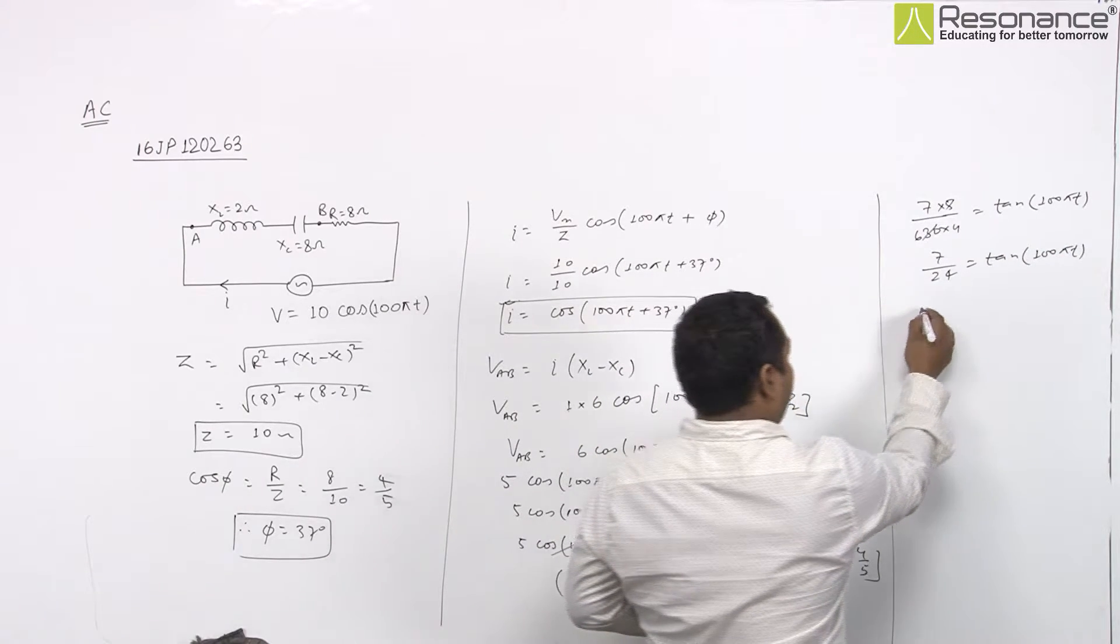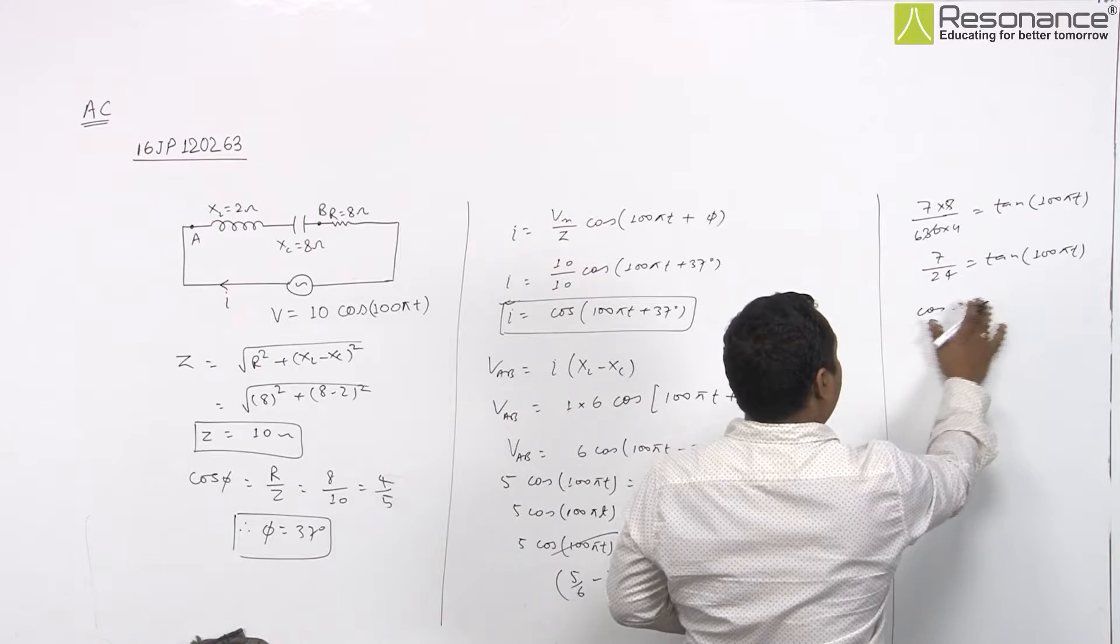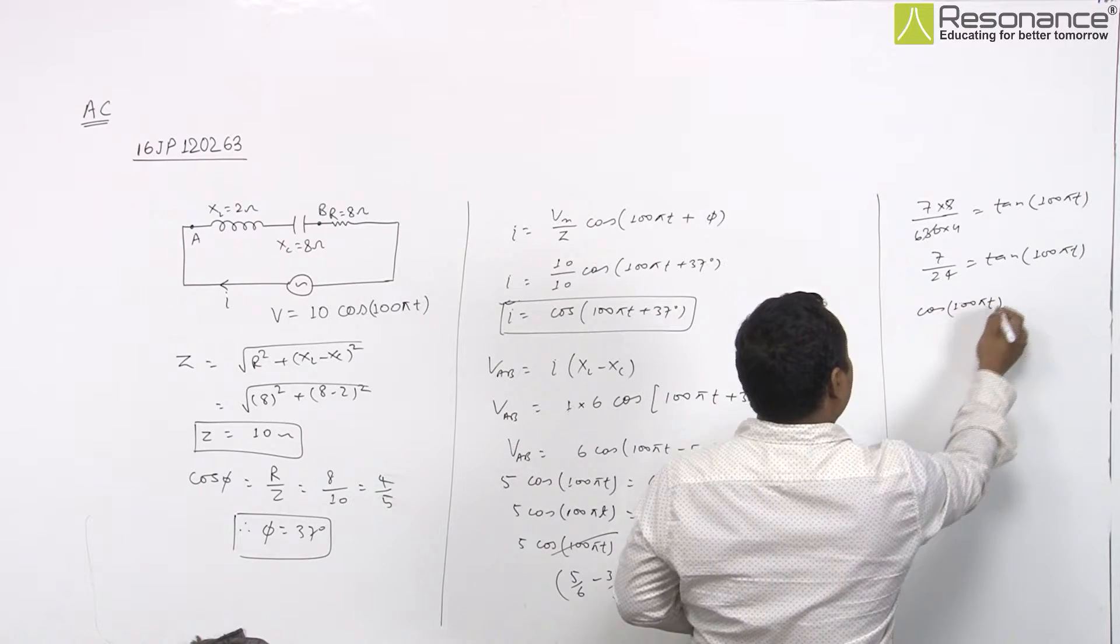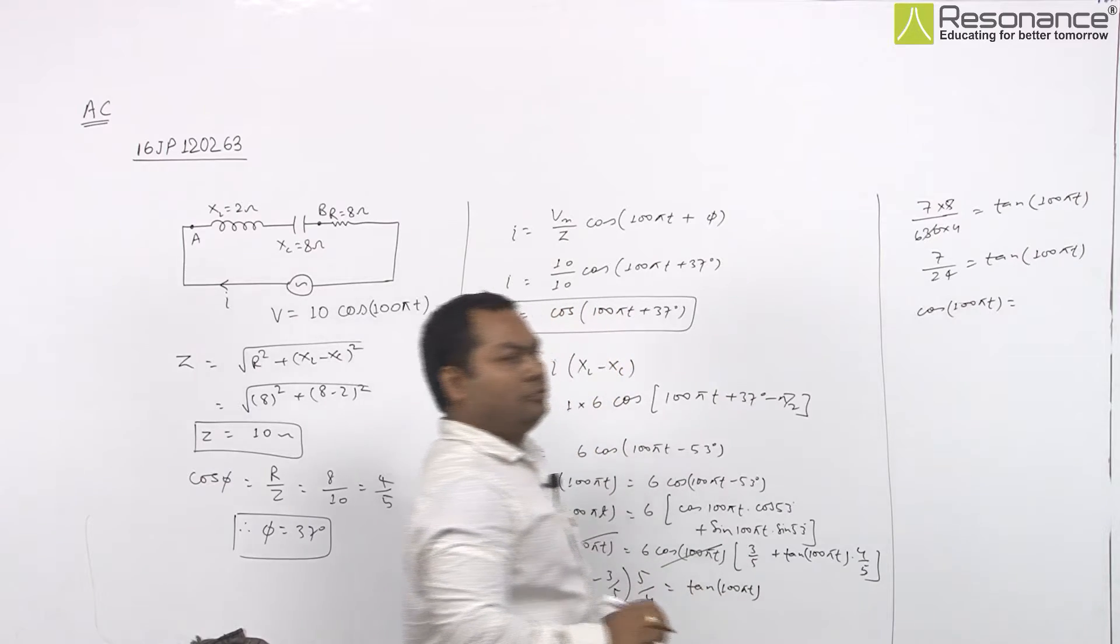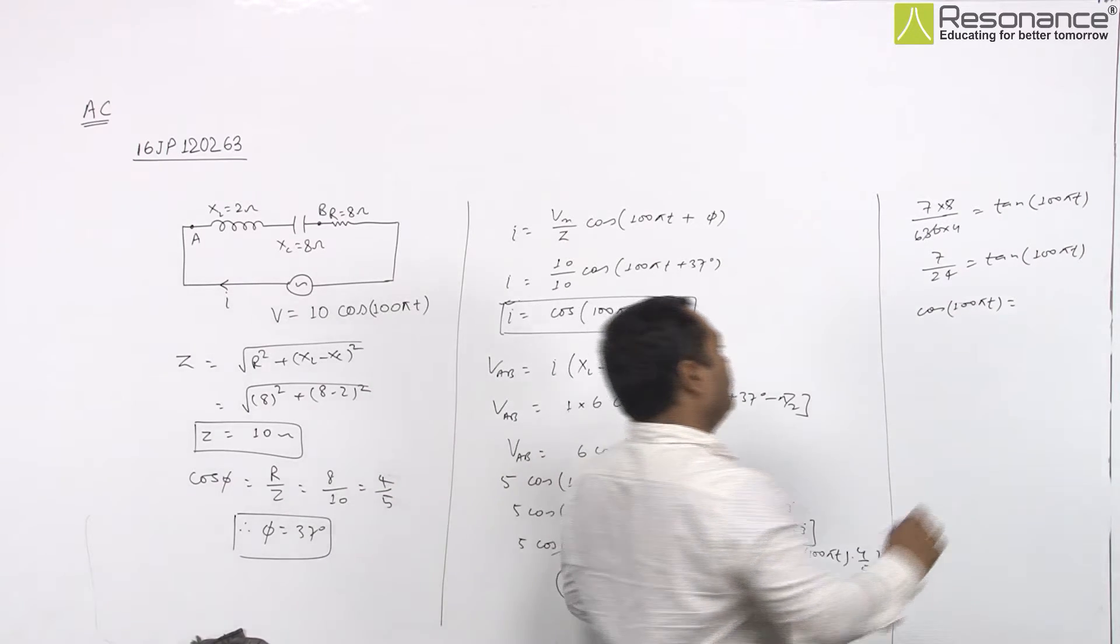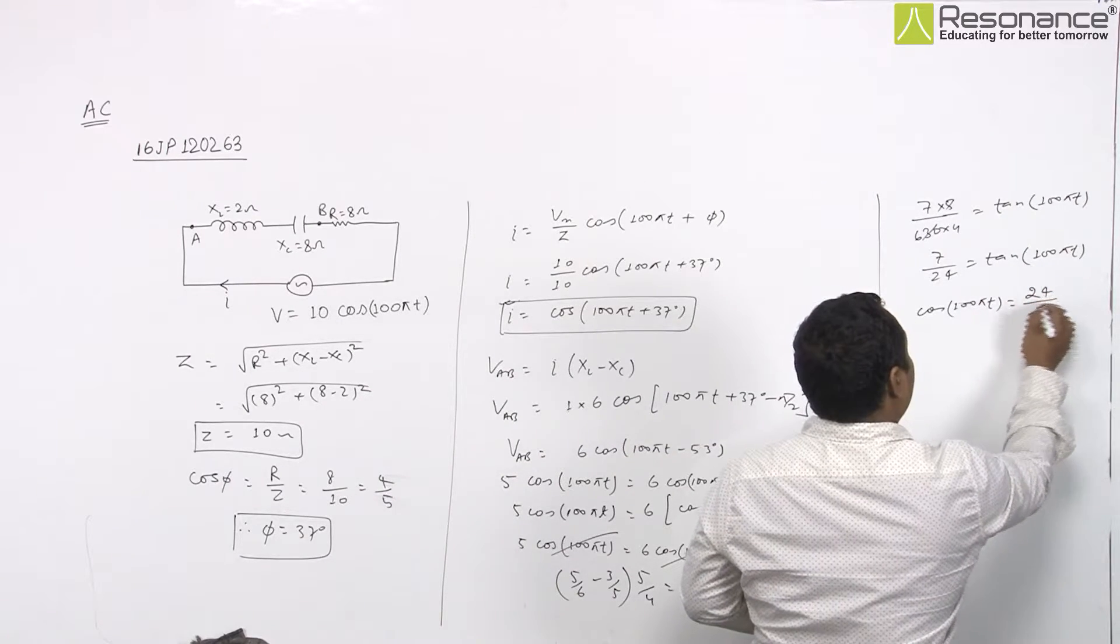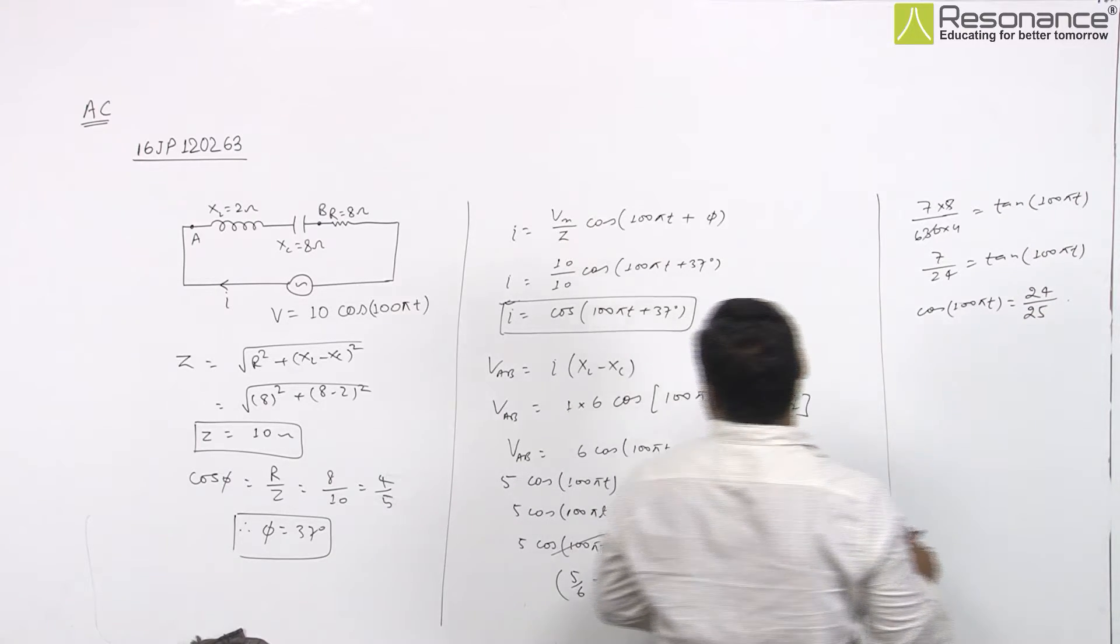From this data, we can find cos of 100 pi T. So cos of 100 pi T will be simply 24 upon 25.